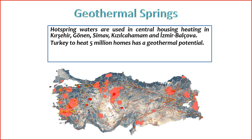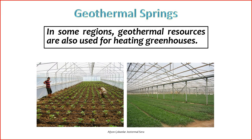The country aims to use geothermal energy not only for heating but also for electricity generation and other direct uses. The abundance of geothermal resources in Turkey positions it as a key player in the development and expansion of geothermal applications for sustainable energy solutions. The goal to heat 5 million homes using geothermal potential reflects the commitment to harnessing this clean and renewable energy source to meet both residential and industrial heating needs. In certain regions, geothermal resources in Turkey are utilized for greenhouse heating, demonstrating the versatility of geothermal energy in contributing to optimal conditions for plant cultivation.